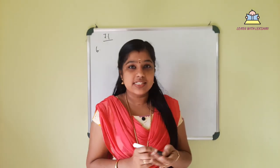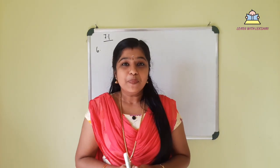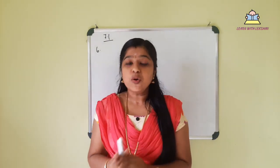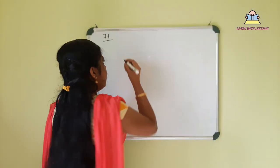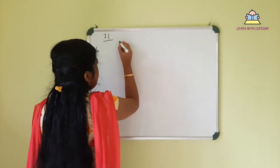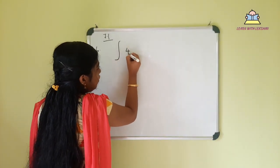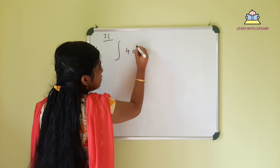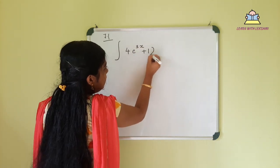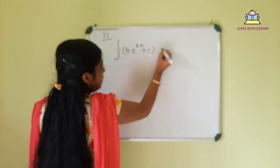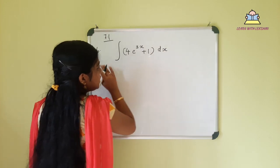The integration starts. First problem: integral of 4 e raised to (3x + 1) dx. This is the first question.